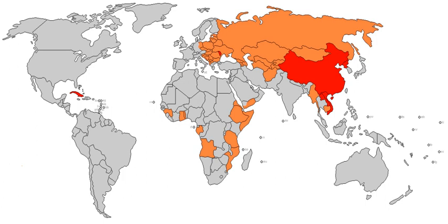Various strains of anarchism and libertarianism advocate different economic systems, all of which have very small or no government involvement. These include left-wing anarcho-communism, anarcho-syndicalism, anarcho-socialism, right-wing anarcho-capitalism, libertarianism, libertarian communism, libertarian socialism, and syndicalism.